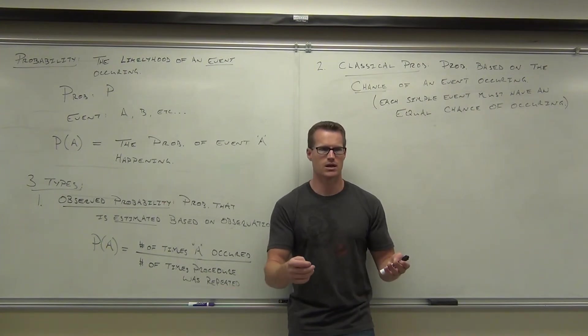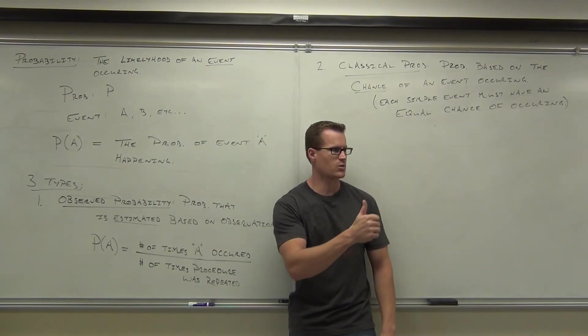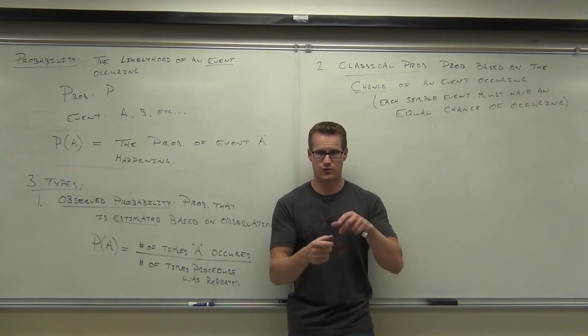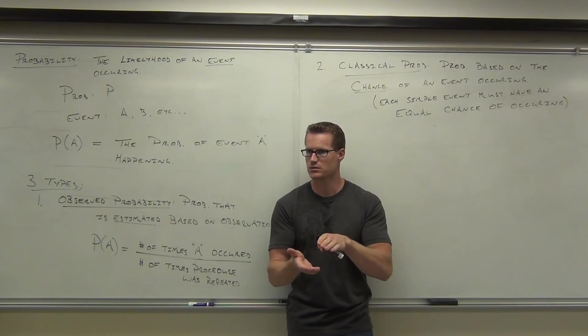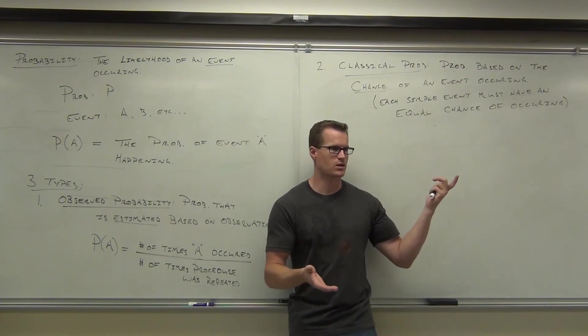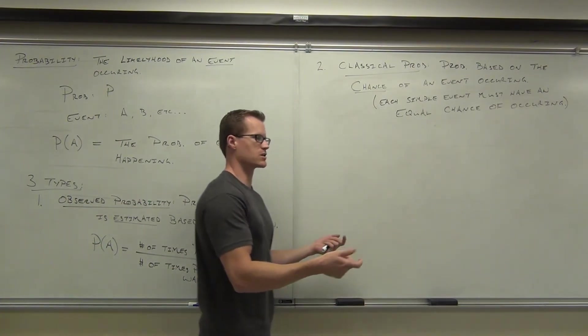The only way you were able to figure out one-sixth earlier, when I said what's probably the roll of 2, is because you thought that every side has an equal chance of happening, right? That's why when you said it gets a head 50% of the time when you flip a coin once, because you figure heads and tails has an equal shot. That's what classical is based on. It's based on every simple event has an equal chance of occurring.